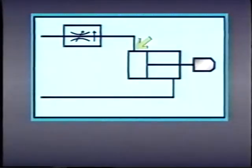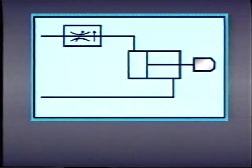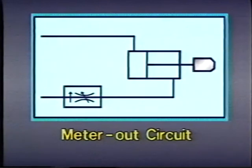In all the flow control circuits we've seen so far, the flow control valve has been on the inlet side of the actuator. These are called meter-in circuits. This meter-in technique works well as long as a load is being moved in one direction and there is no need to control the velocity of the return stroke. A meter-out circuit can be used to provide that control. In a meter-out circuit, the valve operates the same way it does in a meter-in circuit, but the valve itself is placed on the outlet side of the actuator. As a result, the valve controls the flow out of the actuator rather than into the actuator.